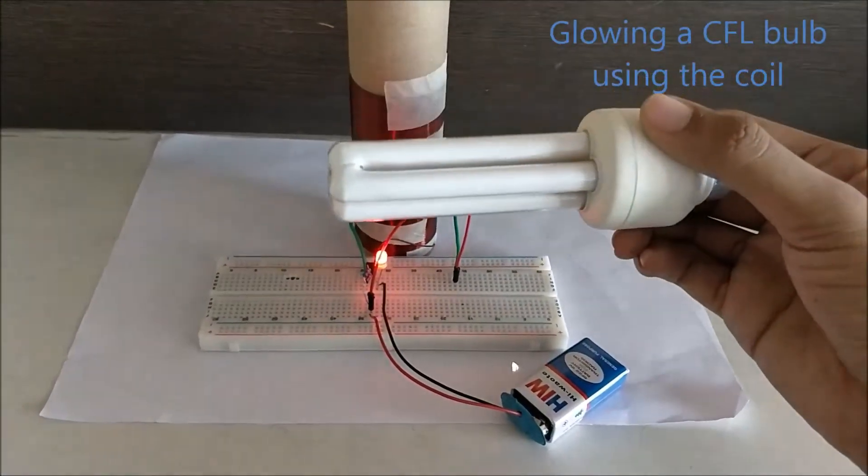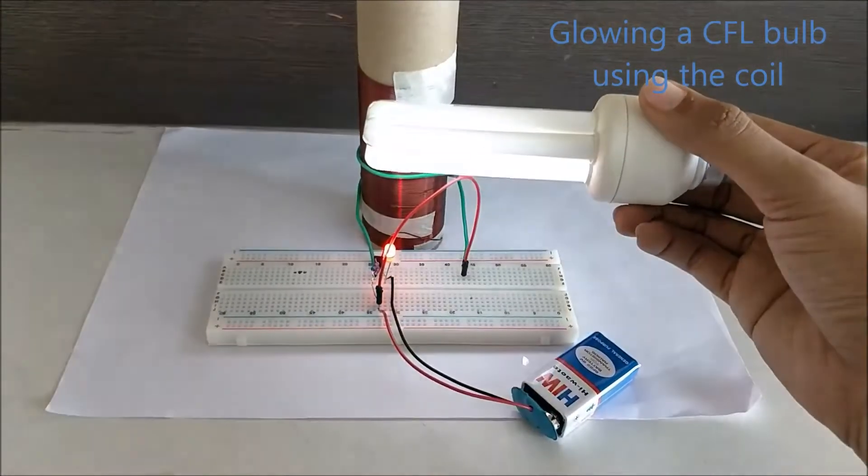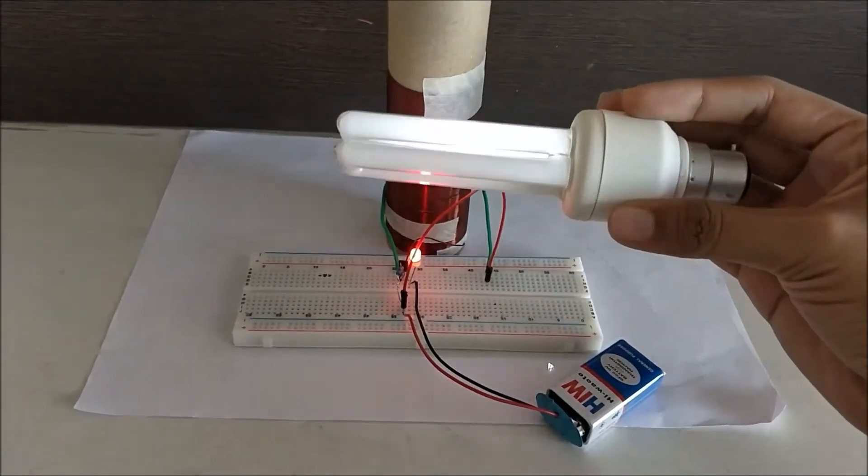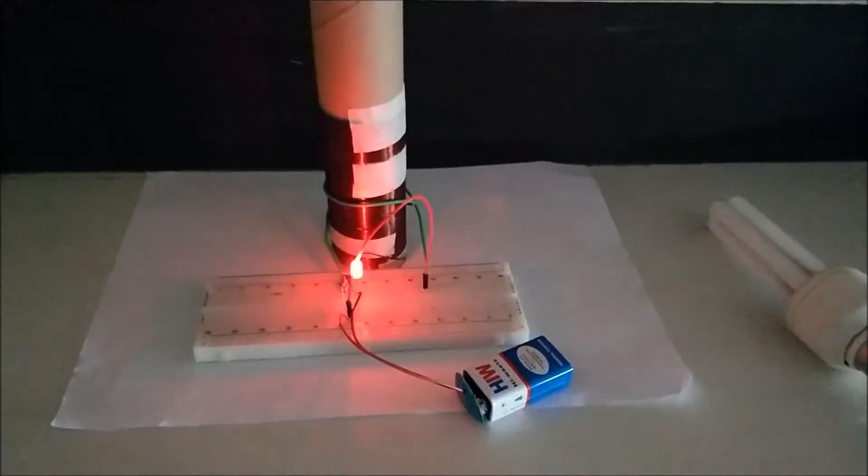Now as you all know, the beauty of a Tesla coil is when we bring a CFL lamp close to the coil, it glows just like this. Now let me turn off the lights and show you how bright the lamp actually is.